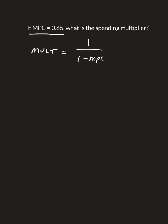So all we have to do is we can go ahead and plug in the MPC that's given for this spending multiplier equation. So we plug in 1 over 1 minus 0.65. That's going to equal 1 over 0.35.